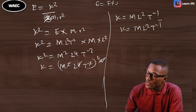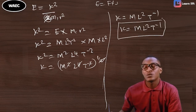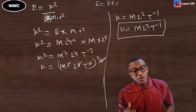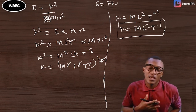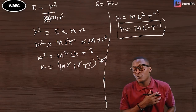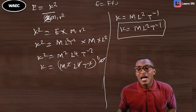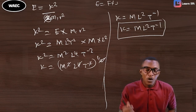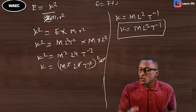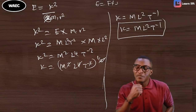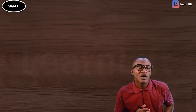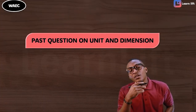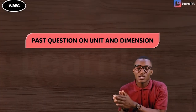So k is equal to ML²T⁻¹. This is the dimension of k (angular momentum), and that's what the question is asking. I hope you understand. You can pause and watch it over and over again. I'm available — you can ask your questions in the Q&A. This covers everything about dimensions. Come out strong in your exams.